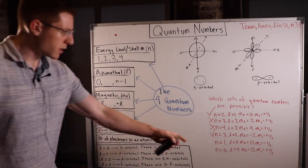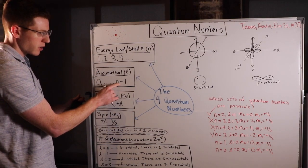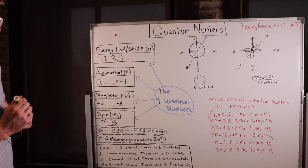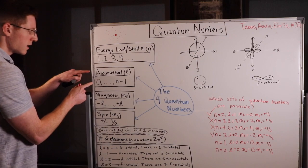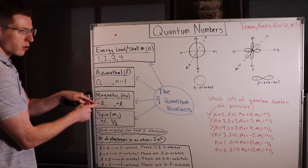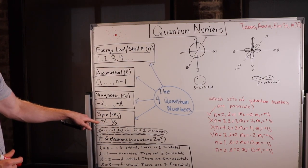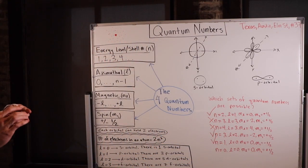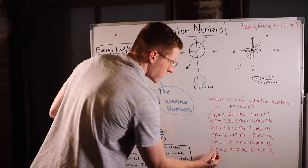The fifth example: N equals 1, L equals 0, M sub L equals 0, M sub S equals negative 1/2. L equals 0 is valid since it's 0 up to N minus 1. If L is 0, M sub L must be 0 — you can't have negative or positive 0 — so M sub L equals 0 is actually required. M sub S equals negative 1/2 is allowed. So this one works. The sixth example: N equals 0 — but N cannot equal 0; it has to start at 1. So without even looking at the rest, this is not a possible set.